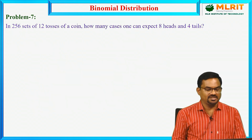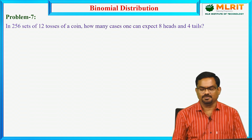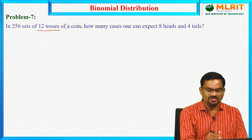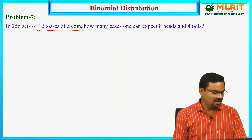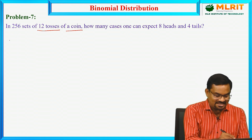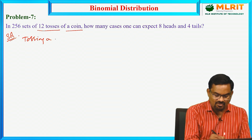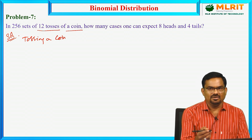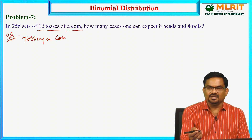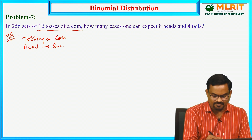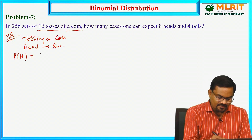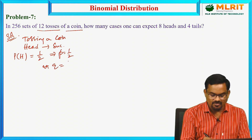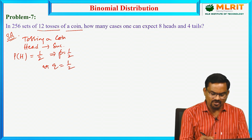The next problem: in 256 sets of 12 tosses of a coin, how many cases can one expect 8 heads and 4 tails? The experiment is tossing a coin, and the outcomes are only two — head or tail. We consider getting a head as a success. The probability of getting a head when a single coin is tossed is 1/2. So p equals 1/2 and q equals 1/2.